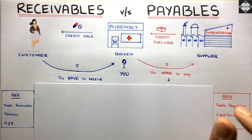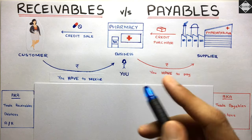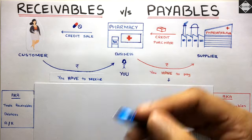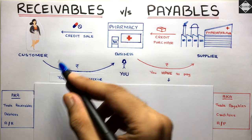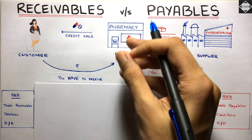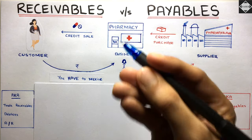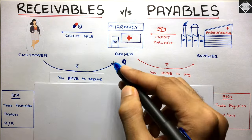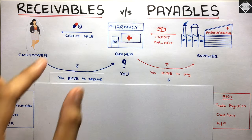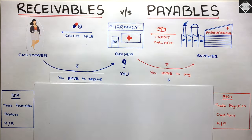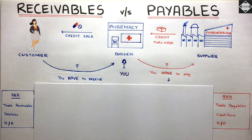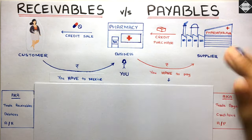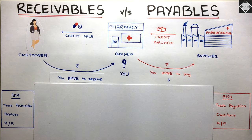After the credit purchase, a customer came to your shop and bought some medicines, but while making the payment she promised to pay after a certain period of time. Here also credit comes into the picture — you are selling medicines to her on credit, and she's promising to pay after 15 days. So a credit purchase happened and a credit sale happened. In both transactions there was no cash flow, only promises.